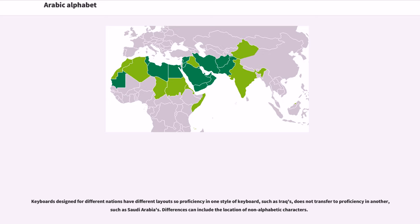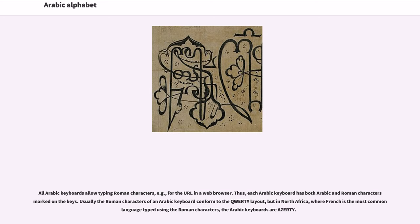Keyboards designed for different nations have different layouts, so proficiency in one style of keyboard, such as Iraq's, does not transfer to proficiency in another, such as Saudi Arabia's. Differences can include the location of non-alphabetic characters. All Arabic keyboards allow typing Roman characters — for example for URLs in a web browser — so each Arabic keyboard has both Arabic and Roman characters marked on the keys. Usually the Roman characters of an Arabic keyboard conform to the QWERTY layout, but in North Africa, where French is the most common language typed using Roman characters, the Arabic keyboards are AZERTY.